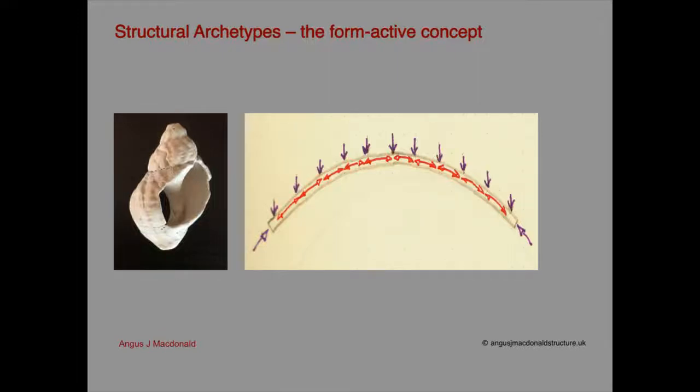The overall form of a structure is the aspect of its shape that has the greatest effect on the quantity of material required to provide adequate strength, and therefore on the embodied energy and carbon footprint of its fabric. This is because the type of internal force that occurs in a structure is determined by its form in relation to the pattern of load that it carries. Shapes that cause internal forces to be axial are efficient. Shapes that produce bending are inefficient.